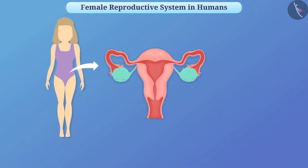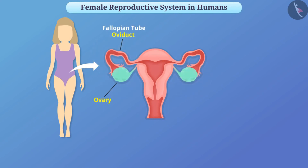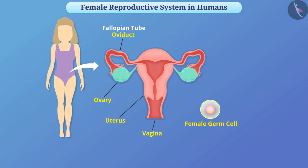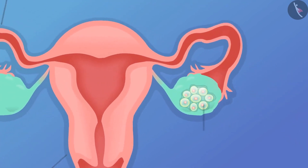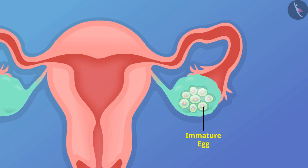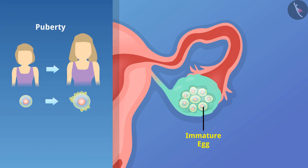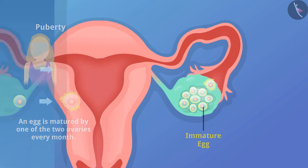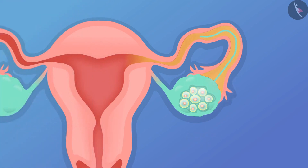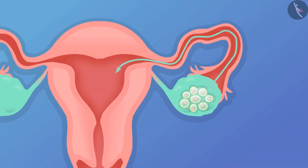The female reproductive system consists of ovaries, oviducts also known as fallopian tubes, the uterus, and the vagina. A female germ cell called an egg cell is formed in the ovary. Various hormones such as estrogen are also produced in the ovaries. From the birth of a girl, many immature eggs are present in the ovaries and begin to mature at puberty. An egg is matured by one of the two ovaries every month and is carried by the fallopian tube into the uterus.